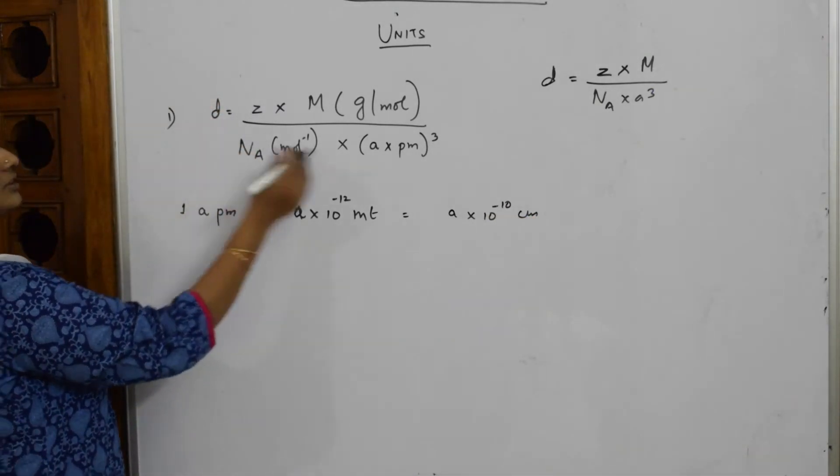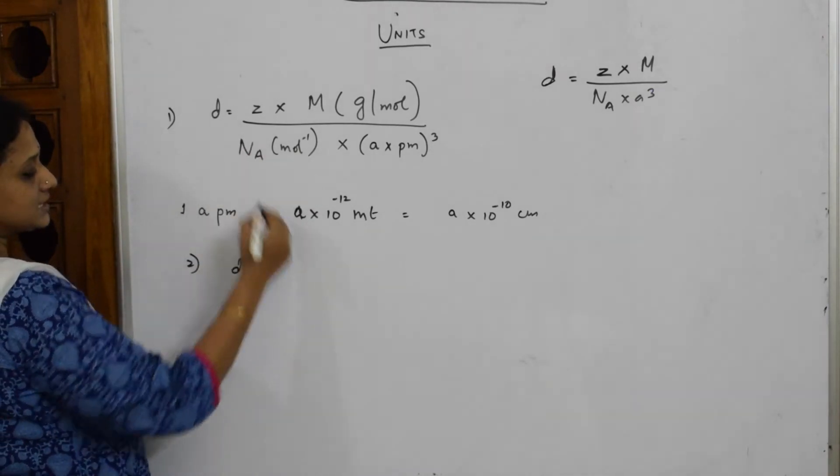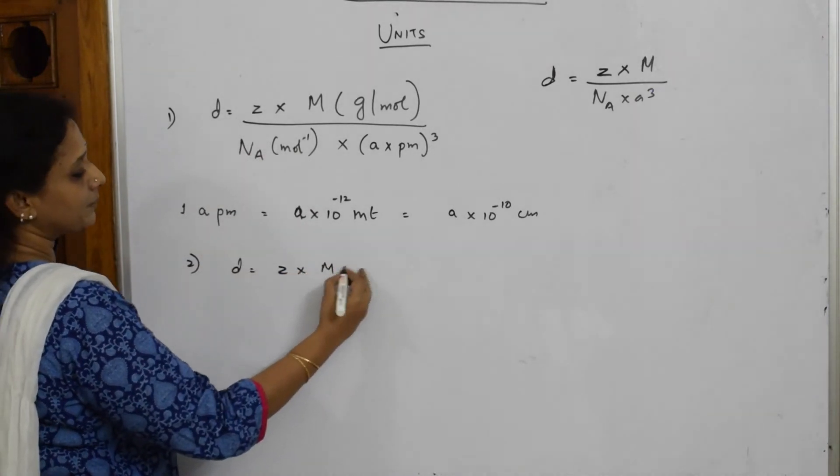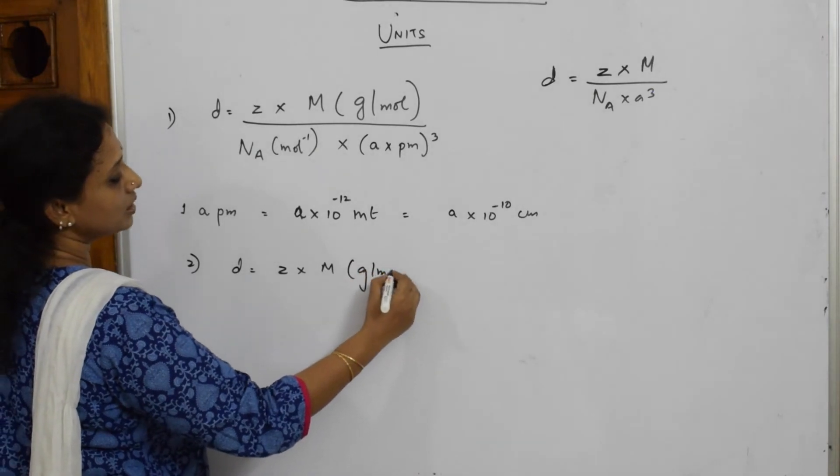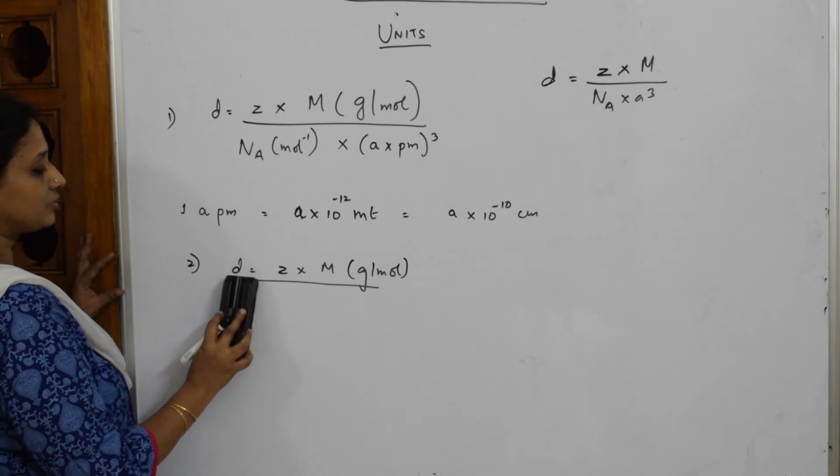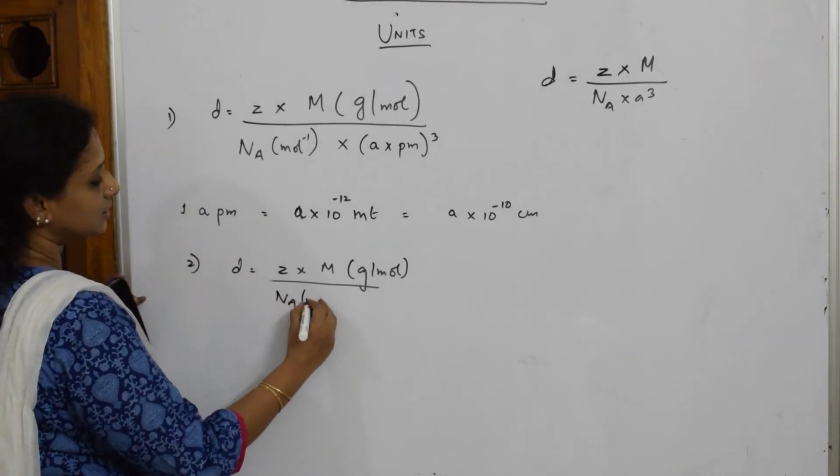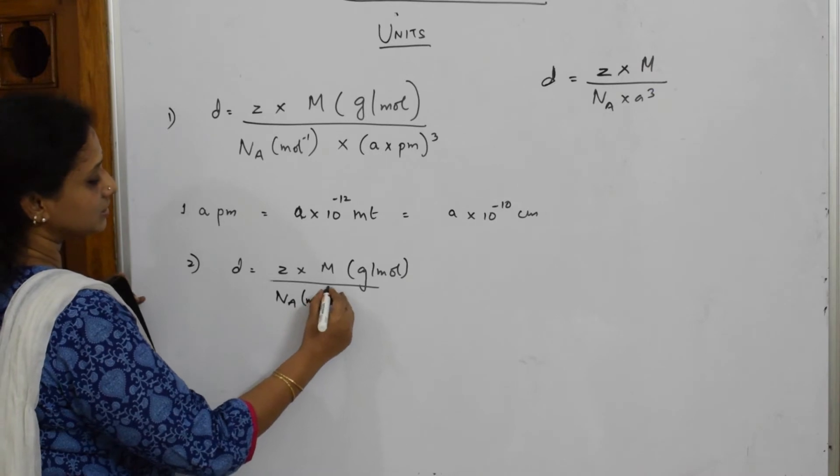If you write the same formula, now I have written in terms of picometer. Let me write in terms of centimeter. D is equal to Z into M gram per mole, divided by - I should not write this - NA per mole inverse.